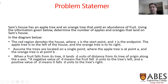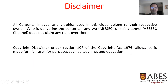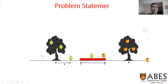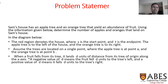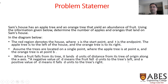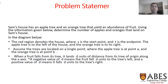The trees are located at specific points: the apple tree is at point A and the orange tree is at point B. When a fruit falls from its tree, it lands some distance D from its tree of origin along the x-axis. A negative value of D means the fruit falls D units to the left of the tree, and a positive value means it falls D units to the right. We have to determine the number of apples and oranges that land on Sam's house.